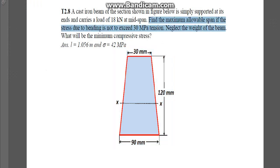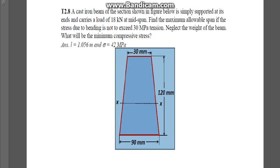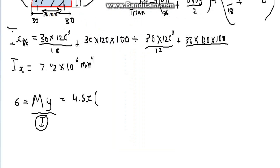The question is asking, find the maximum allowable span if the stress due to bending is not to exceed 30 megapascals tension. Not to exceed 30 megapascals tension. The maximum allowable span. What is the maximum allowable distance of the beam so that it does not exceed 30 megapascals in tension? Let's actually work this out. Use 30 megapascals as tension, tension being stress.